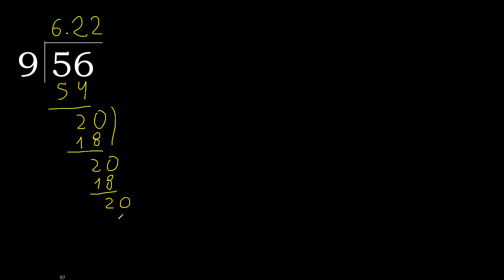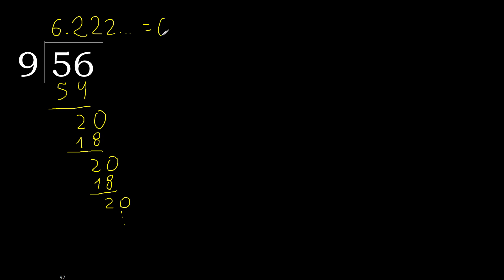Repeat, therefore repeat. Therefore 2 repeats — finish it. 56 divided by 9 is here. After the point, 2 repeats. Therefore like this — repeat.